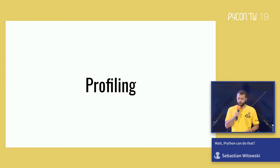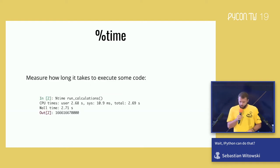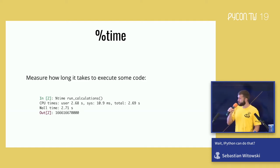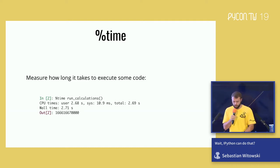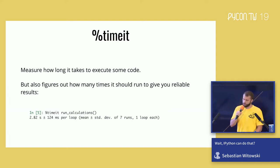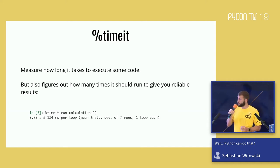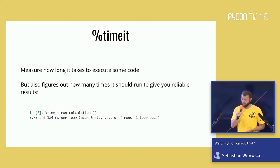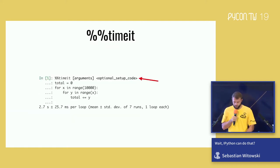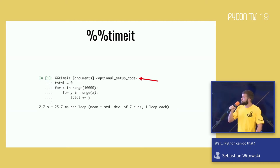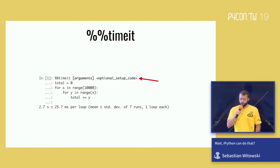Another interesting set of features is related to profiling your code. The first magic function is called `%time` — the simplest way to measure execution time. It runs your code once and prints how long it took according to the CPU and wall clock. Much more interesting is `%timeit`, which by default automatically determines how many times your code should run to give reliable results — for a very fast function it might run a few thousand times, for a slow one just a few times. There's also a cell magic version of `%%timeit`, more convenient for multi-line code. One nice thing about the cell version is that after the arguments you can pass setup code that will be executed but won't be part of the measurements.